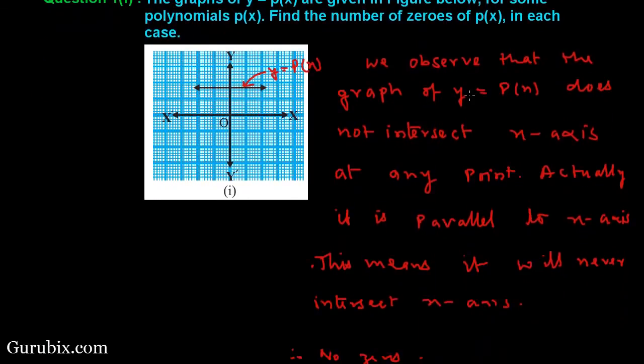We observe that the graph of y = p(x) does not intersect the x-axis at any point. Actually, this line is parallel to the x-axis.